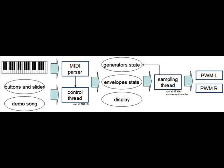Once I press a key on the keyboard, it generates a MIDI message which is then received by the synthesizer at the MIDI parser. The MIDI parser runs as the interrupt handler for the serial interface. Once we receive a command or a tone, it sets the generator states, the envelopes, and might update the display.